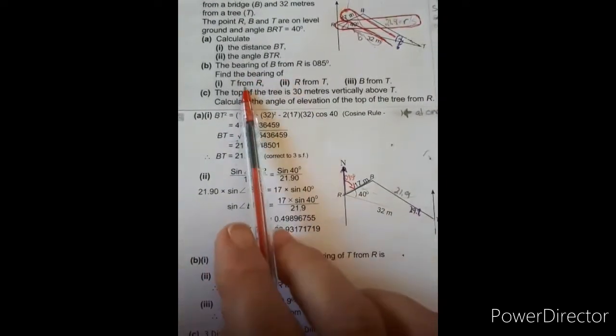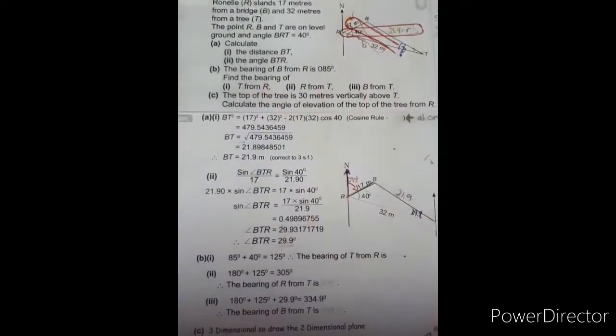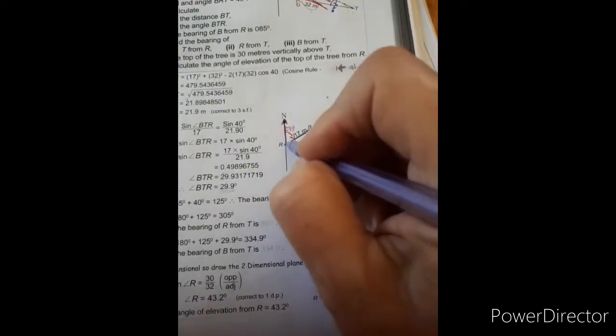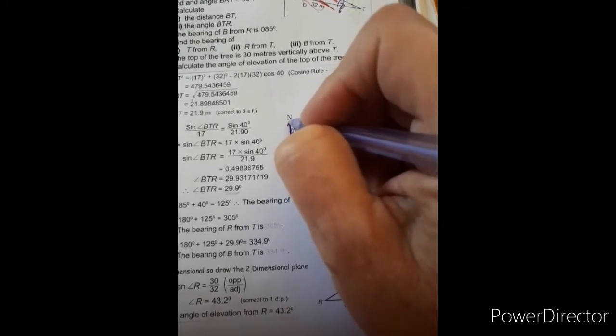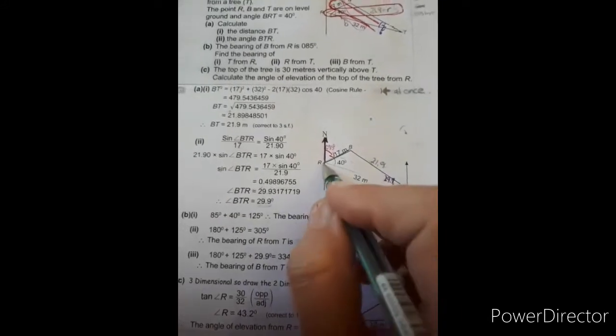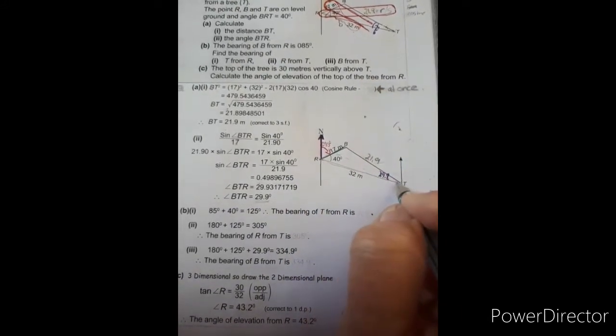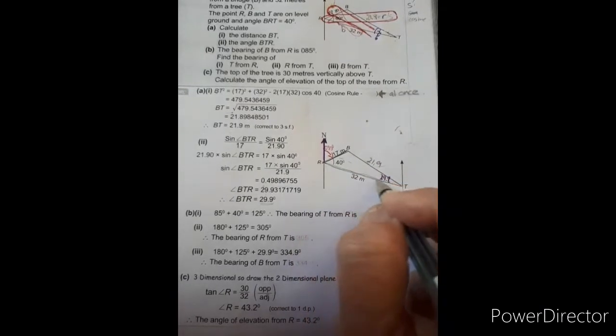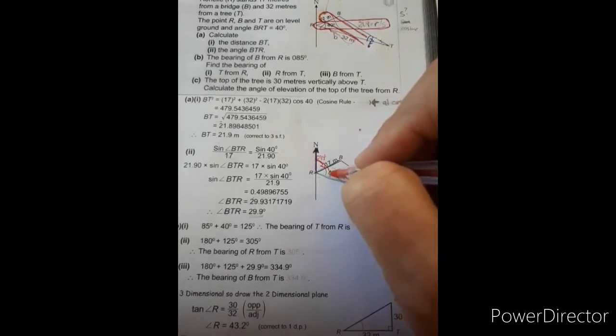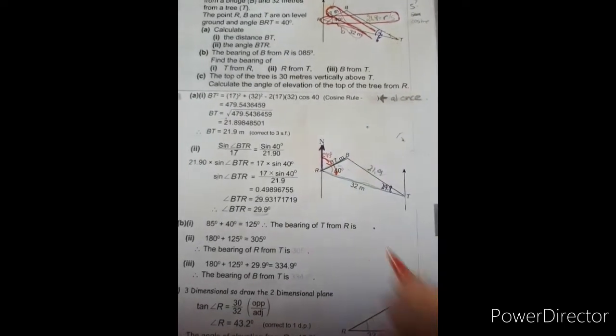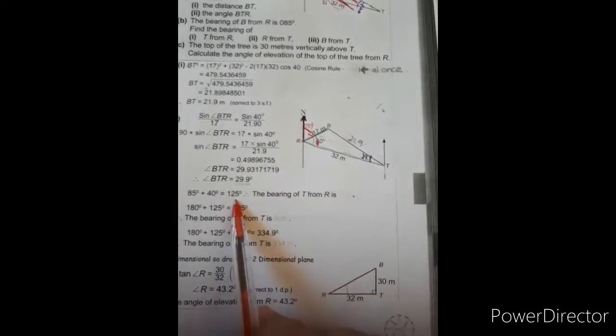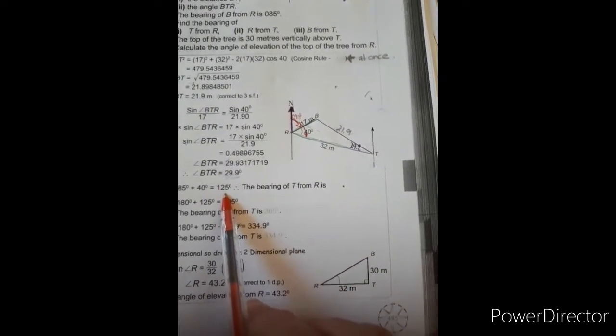They're then asking you the bearing of T from R. This is T from R, meaning we are going to have our north line there. But now T from R is this journey line. So now we go from the north line all the way around. And this is quite easy, people. It's the 85 degrees plus the 40 degrees, which gives you 125 degrees.